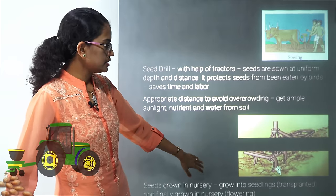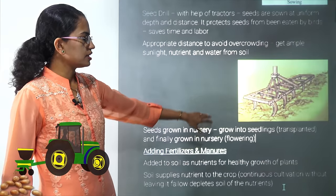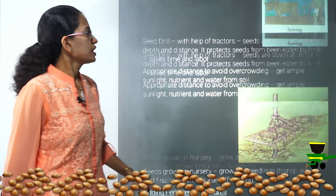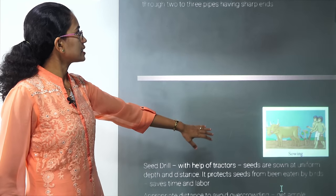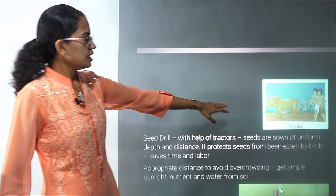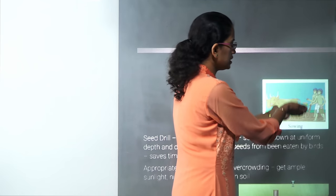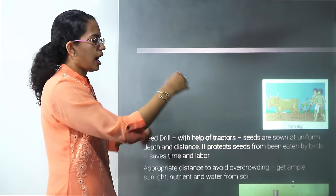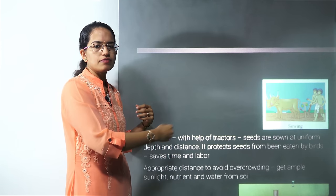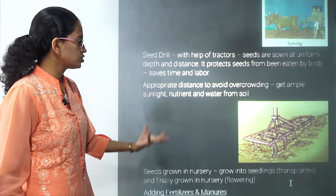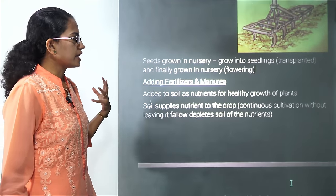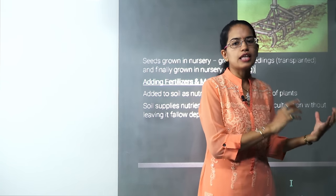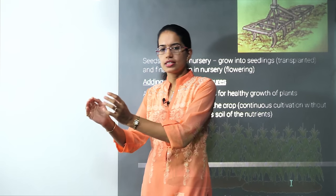The seed drill puts seeds at equal intervals. Another traditional method uses a funnel-shaped structure — seeds are poured into the funnel and as the bullock moves, seeds fall from the funnel into the soil. In some cases, seeds are first grown in a nursery into seedlings and then transplanted into the main field.